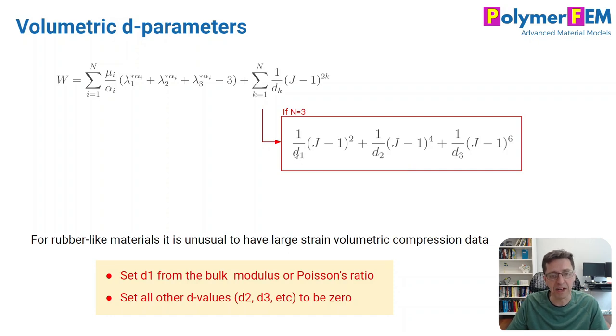I typically find d1 based on information about what the bulk modulus is or based on the Poisson's ratio, and I set the rest of the d parameters to be zero because I don't have enough information about it and I don't really care about it anyway.